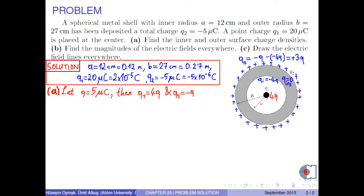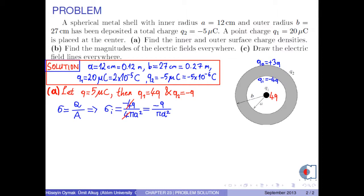Surface charge density is found by the formula total charge over the area of the surface. Then, the inner surface charge density is found as negative 4Q over 4 pi A squared. Here, fours are cancelled. Then, we are left with negative Q over pi A squared. Now, we can put the numerical values into this formula. As a result, we obtain negative 1.11 times 10 to negative 4 C per meter squared.